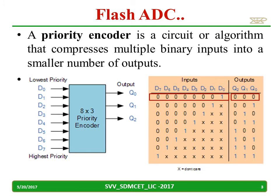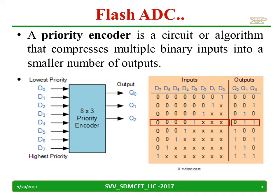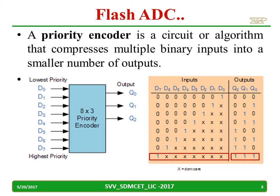If D3 is high and D2, D1, D0 may be high or low, the output you will get is 0, 1, 1. Similarly, when D7 is high and the remaining may be zeros or ones, the output of this priority encoder is 1, 1, 1.